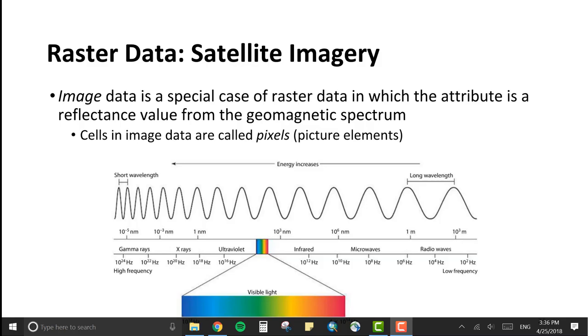Satellite imagery, as we mentioned earlier, is one source of raster data. Image data is a special case of raster data in which the attribute is a reflectance value from the geomagnetic spectrum. Cells in image data are called pixels or picture elements. With our human eyes, we are able to see within the visible spectrum of the geomagnetic spectrum. However, satellites give us the opportunity to see beyond the visible spectrum. We can have sensors that, for instance, pick up infrared light. Therefore we can collect that imagery and analyze things beyond the visible spectrum.